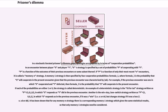In a stochastic iterated Prisoner's Dilemma game, strategies are specified in terms of cooperation probabilities. In an encounter between player X and player Y, X's strategy is specified by a set of probabilities P of cooperating with Y. P is a function of the outcomes of their previous encounters or some subset thereof. If P is a function of only their most recent N encounters, it is called a memory-N strategy. A memory-1 strategy is then specified by four cooperation probabilities, where each probability is the likelihood that X will cooperate in the present encounter given the outcome of the previous encounter. For example, if the previous encounter was one in which X cooperated and Y defected, then the corresponding probability gives the likelihood that X will cooperate in the present encounter.